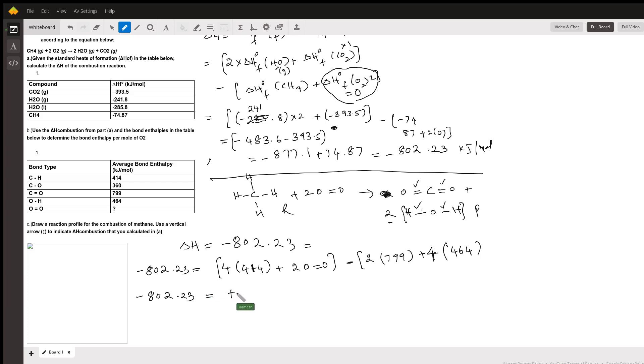414 gives me positive 1656. I'm going to assume this oxygen value as x. So I'm going to write 2x. Then 799 times 2, that's 1598 plus 4 times 464, that's 1856. So left side again, I have 802.23, 1656, then 3454. Please pay attention. This has a negative value. This is a positive sign. So if I do that math.